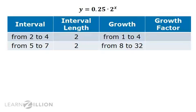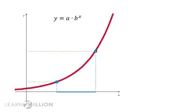Because from 1 to 4, the growth factor is 4. In other words, you have to multiply 1 times 4 to get to the result of 4. Similarly, you have to multiply 8 times 4 to get to the result of 32. In this lesson, we're going to prove that for any exponential function, equal intervals will result in growth by equal factors.